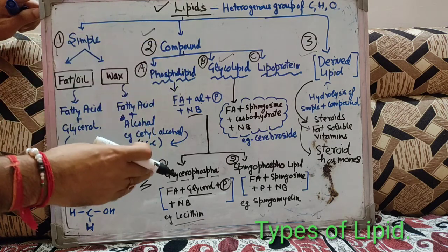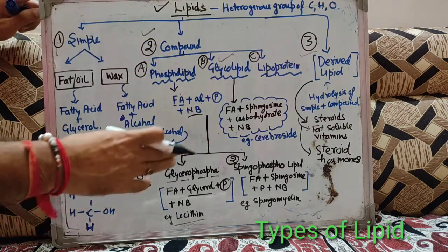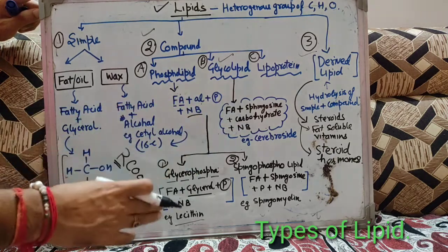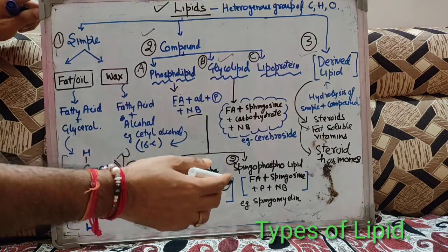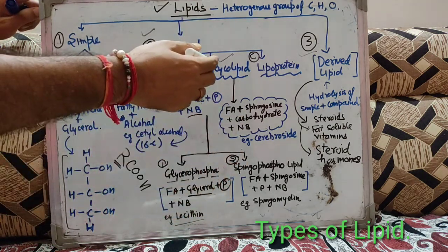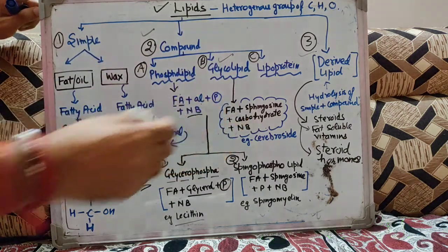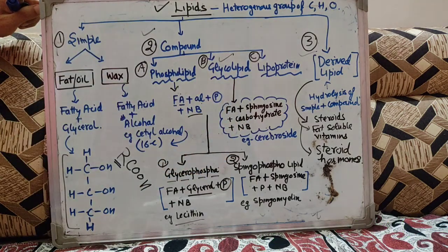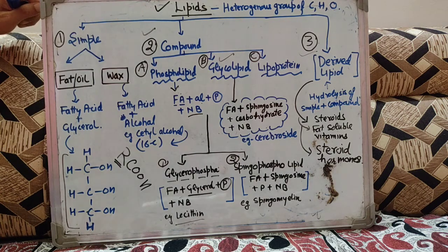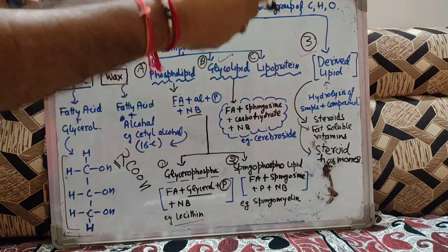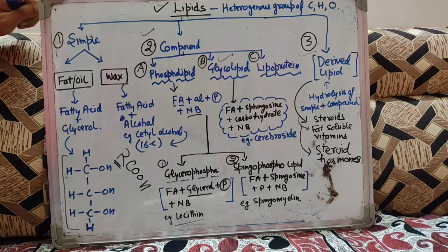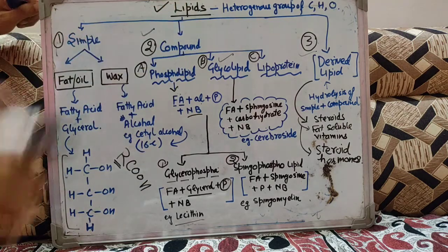Derived lipids third category है जो कि hydrolysis of simple and compound lipids से बनते हैं. Simple lipids में fatty acid and glycerol — fat and oil बनाते हैं; waxes में fatty acid and alcohol other than glycerol जिसमें cetyl alcohol wax बना देगा. Compound lipids तीन types के होते हैं: phospholipids, glycolipids, lipoproteins. Phospholipids दो types: glycerophospholipids (example lecithin) और sphingophospholipids (example sphingomyelin). Glycolipids का example cerebroside है. Lipoproteins — chylomicron, VLDL, HDL, LDL, fatty acid and albumin — ये other lipids को transport करने का काम करते हैं.